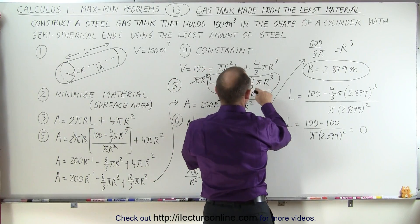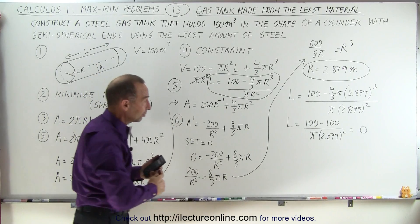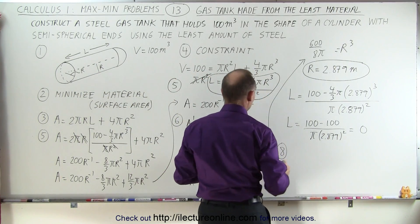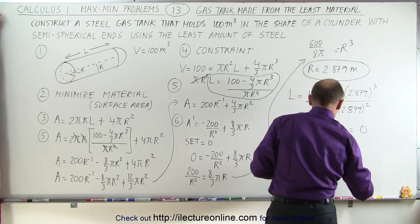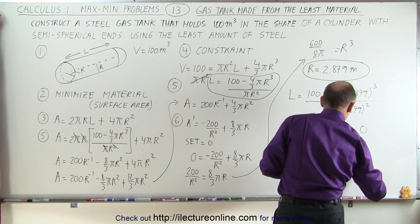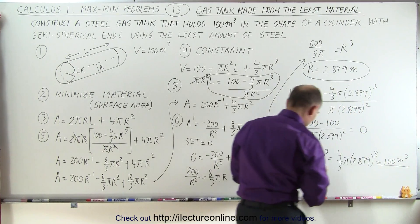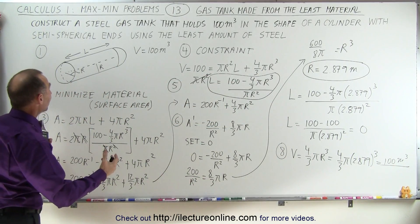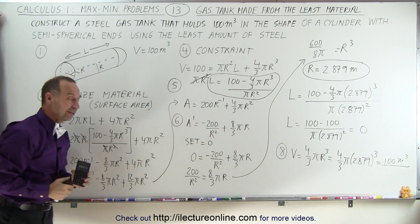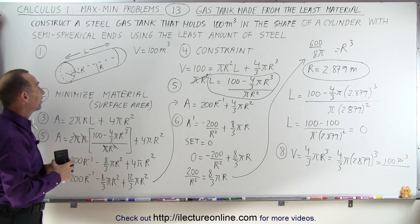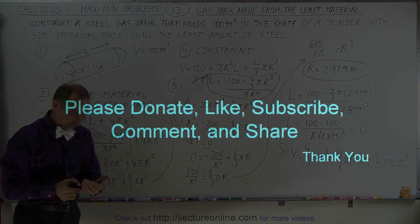To verify: the volume equals (4/3)πr³. Plugging in r equals 2.879 meters and cubing it, we do indeed get a volume of 100 cubic meters. So if you want to build the cheapest tank using the least amount of material, you simply eliminate the cylindrical portion, put the two semispheres together, and that gives you a spherical tank using the least amount of material. And that's how it's done. Thank you.